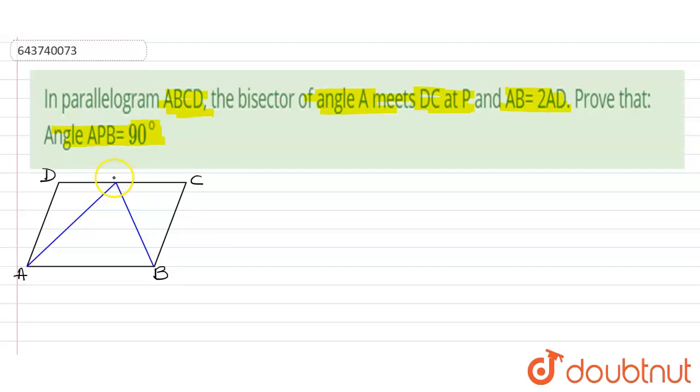First of all, this is P. These angles are equal because AP bisects angle A. So we have angle DAP is equals to angle PAB, which is equals to theta.